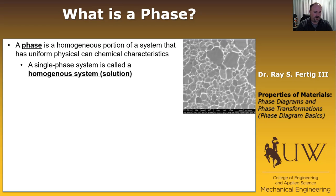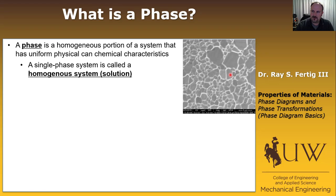A single-phase system means there's only one phase in the whole system. What I'm showing here is actually a SEM micrograph of pure nickel. You're looking at nickel grains, and each grain is nickel just oriented differently. So the phase in this case, if you want, is pure nickel.